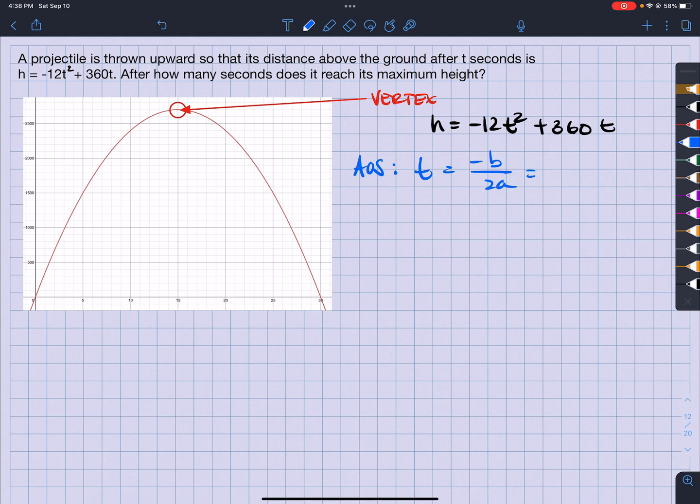Negative b will be negative 360 divided by 2 times negative 12. So what does that give me? 360 over 2 times 12 is 24, so that's going to give me 15. So t is going to equal 15, which looks about right.